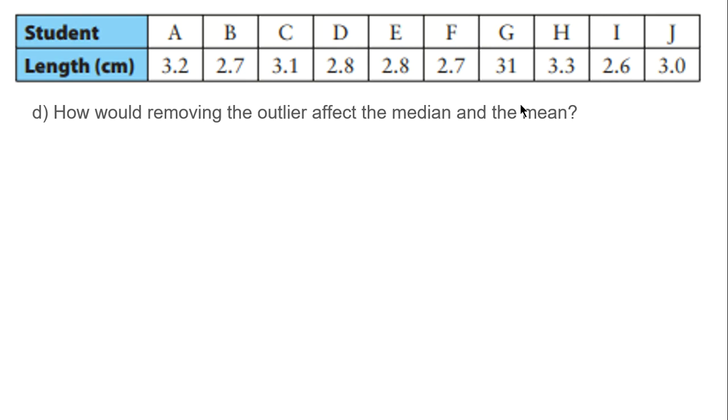So, how would the outlier affect the median and the mean? Like we just talked about. The median, not so much. The mean, quite a bit. Right?